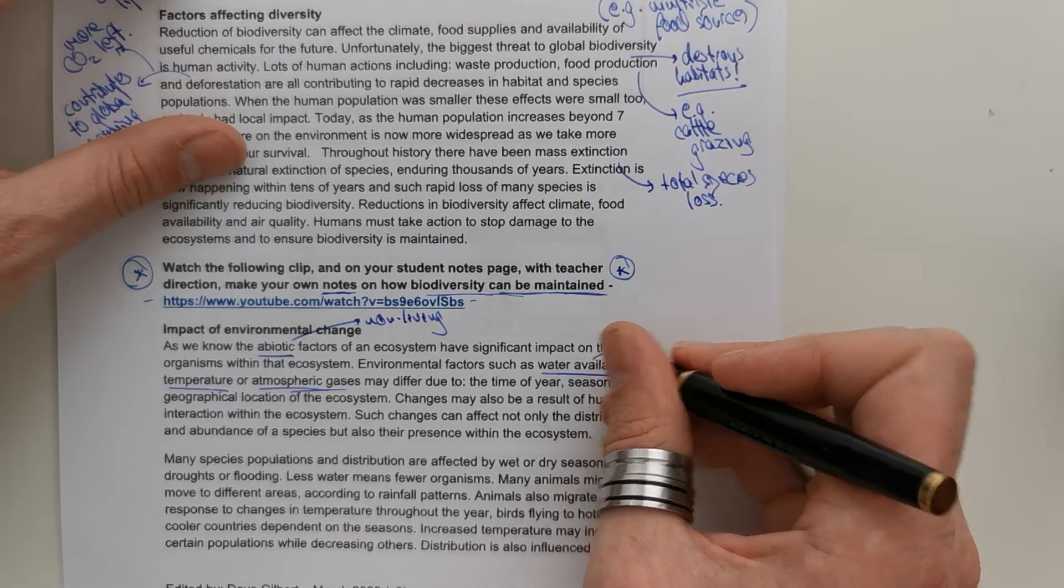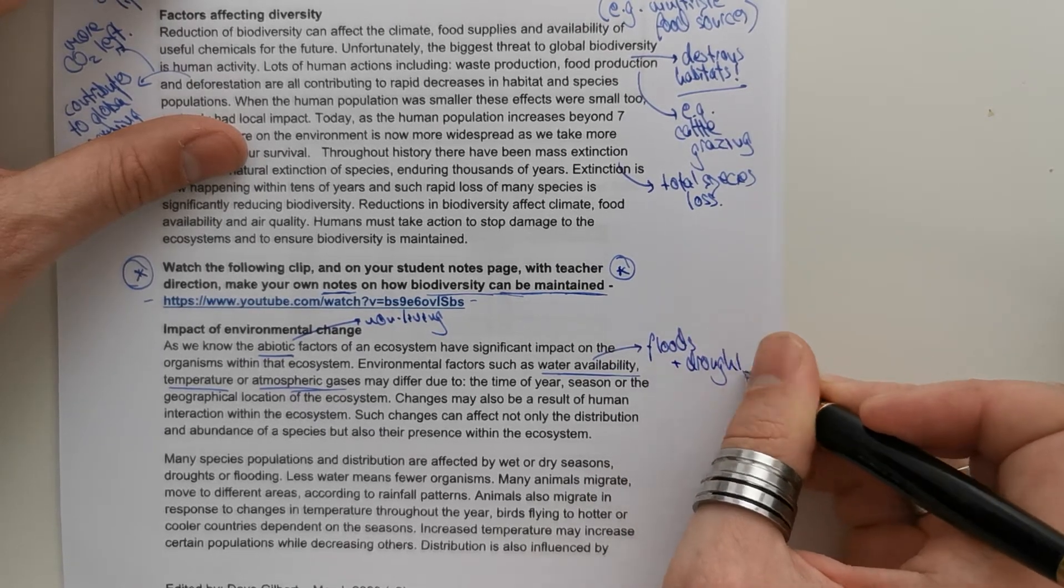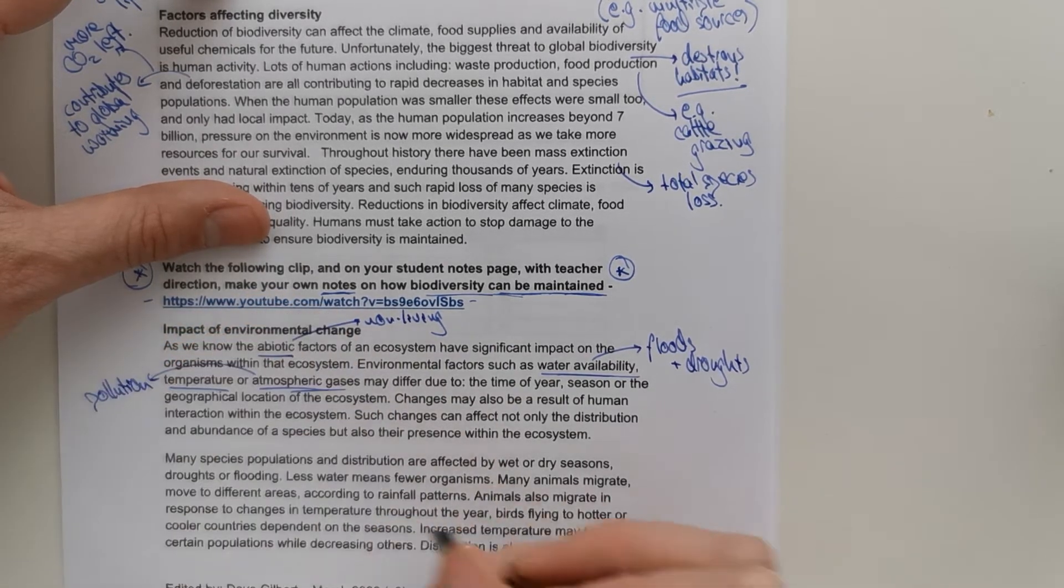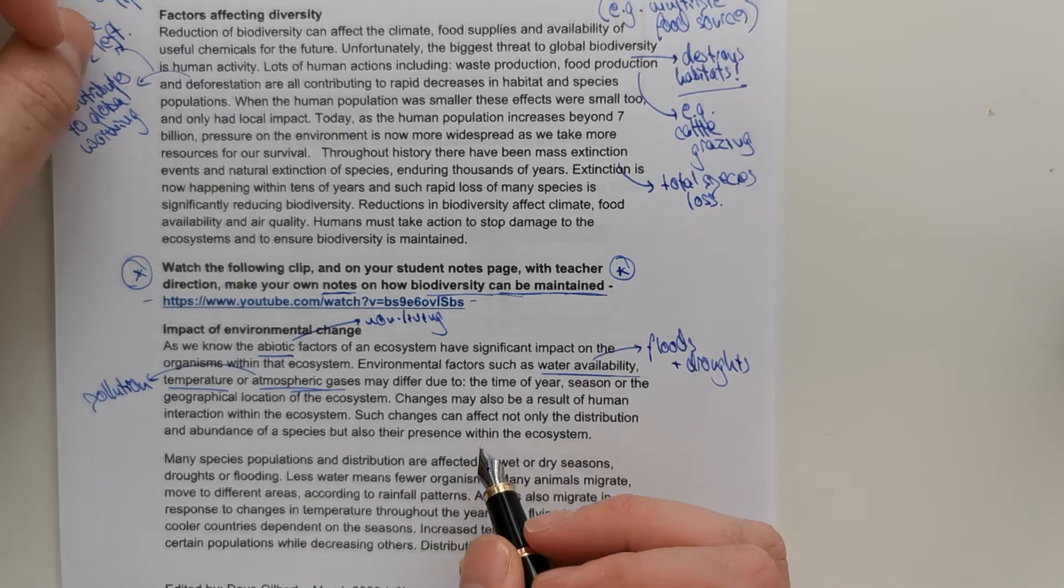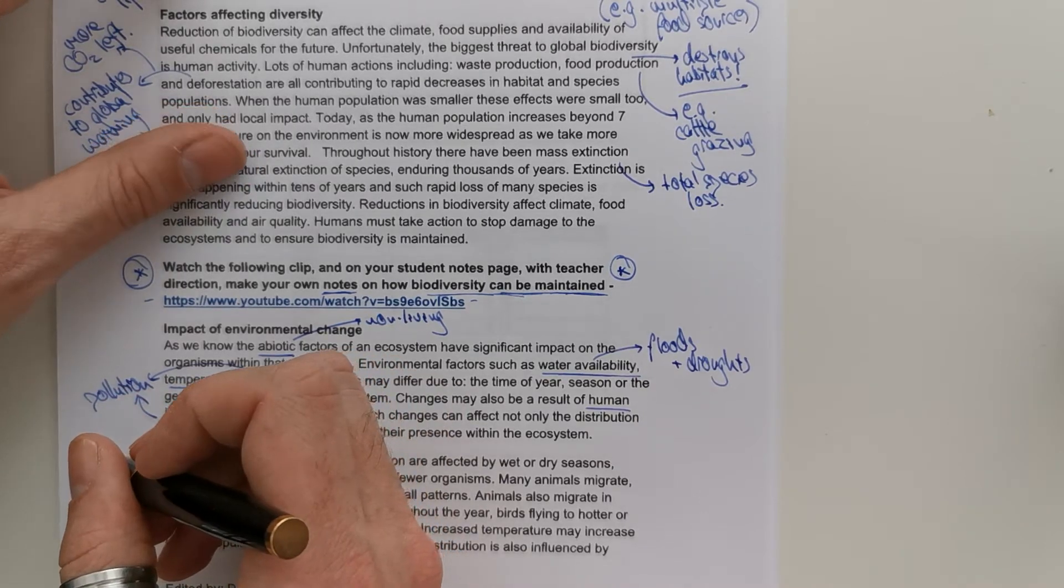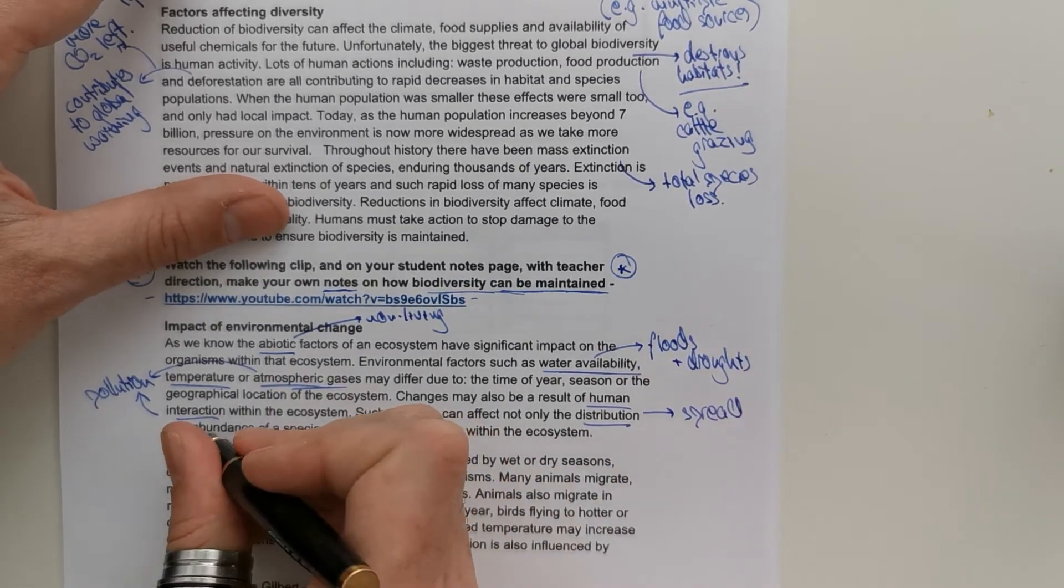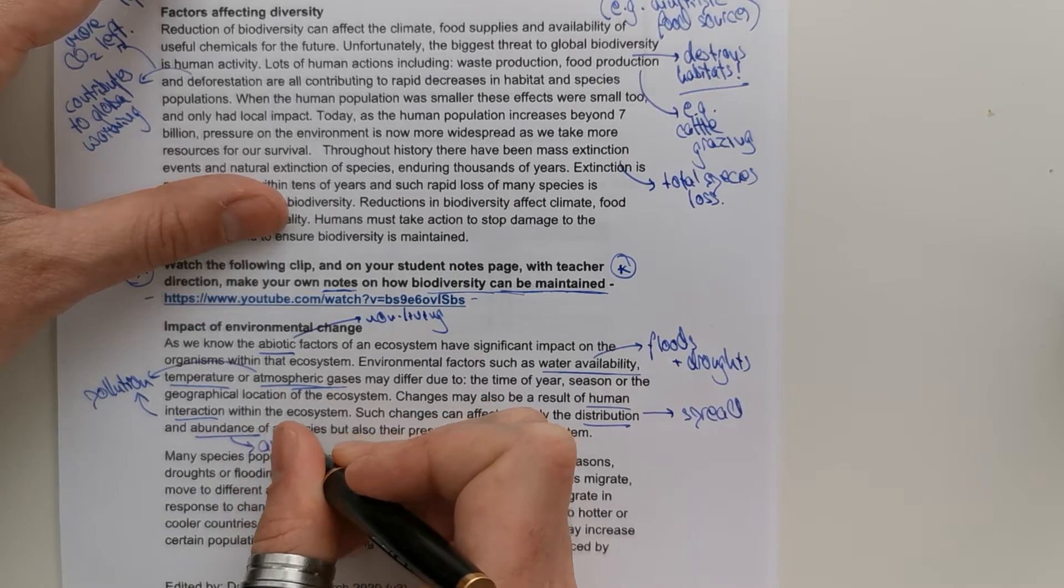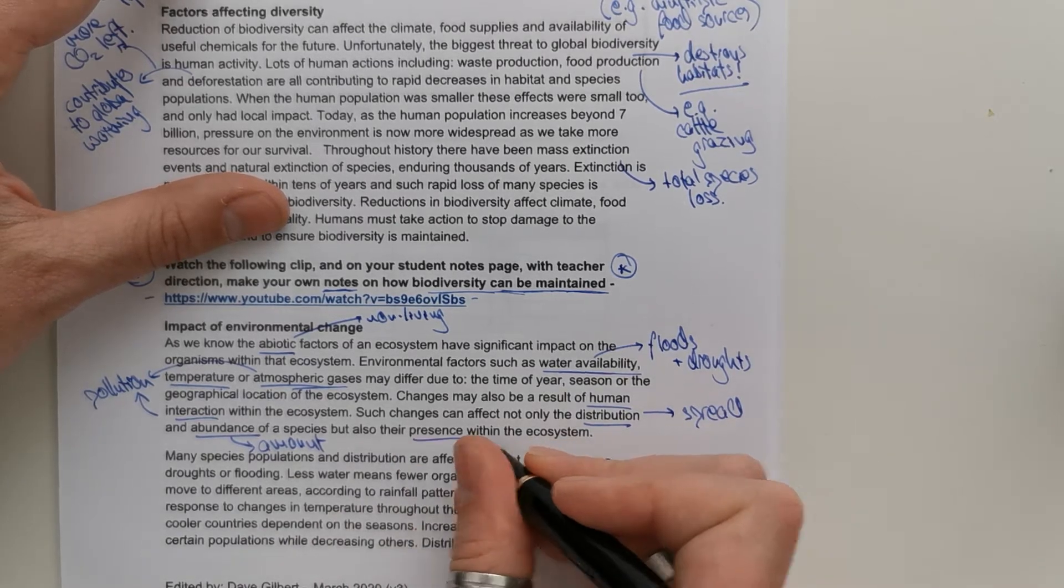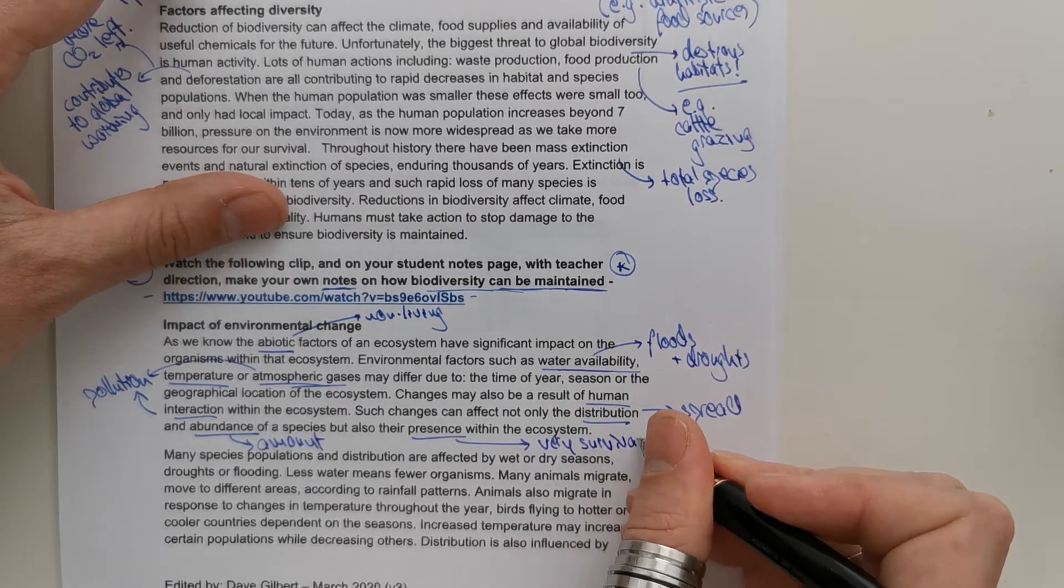So, think about things like water availability and temperature. Floods and droughts. And how are atmospheric gases changed? They're changed by pollution. They may differ time of year, season, geographical location, and they can also result as a human interaction. So, especially pollution. Now, such changes can not only affect the distribution. What do we mean by the term distribution? We mean the spread, the spread of species. And the abundance, the amount of species. So, where they are and how many of them are. But also their presence within the ecosystem. So, their actual very survival changes in these abiotic factors can occur.